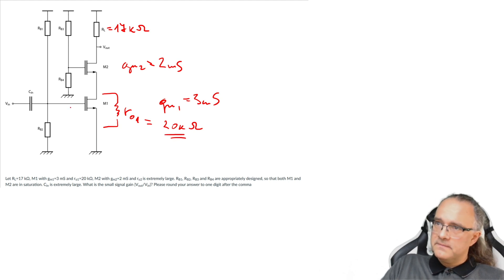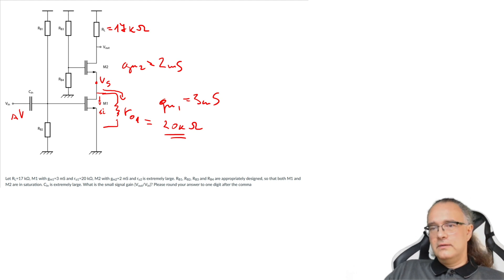So now there is a difference. We are given the channel length modulation of M1. So what will happen is that we have this signal here ΔV and say this node is V and it will generate here the current ΔI and part of the current will leak through R out one. So at the output we will not have a GM·RL but we will have something else. What is this else?